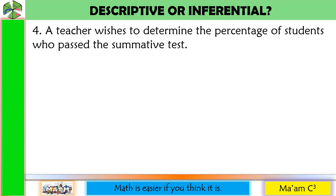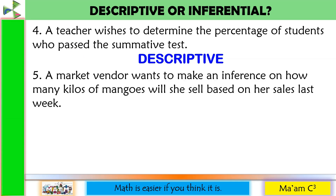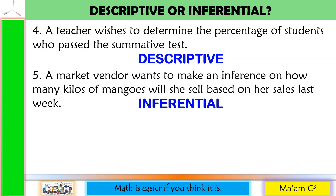Let's have some more. A teacher wishes to determine the percentage of students who passed the summative test. 'Past' — meaning it's already done. The teacher simply wants to know the percentage of students who passed. This is descriptive statistics. Another one: a market vendor wants to make an inference on how many kilos of mangoes she will sell based on her sales last week. Since it says 'inference,' this is inferential statistics.